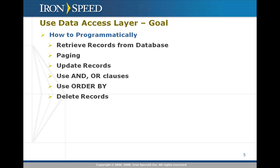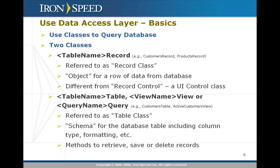Before we get into exactly how you would do that, let's talk conceptually about what is available to you and how you would use it. One of the things IronSpeed Designer does is generate two classes for you as part of being able to access the database. These two classes usually have a suffix added to the end of the table name. So if you have an employees table, we will create an employees record class and an employees table class for you.